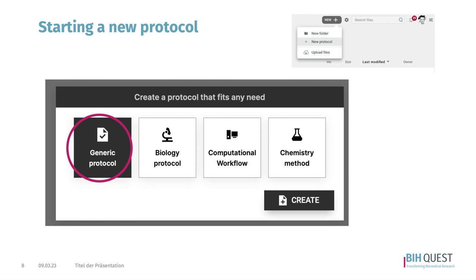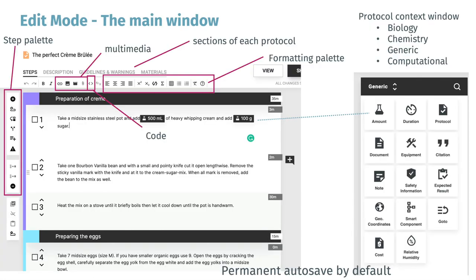I would start with the generic protocol because that gives you lots of great options. Just check them out and see what is behind each one. After you select a template and click create, it brings you to the editing mode — this is the main window you will work with. On top you see the name of the protocol, here called 'the perfect crème brûlée', and in orange you can see that it is currently in draft mode.